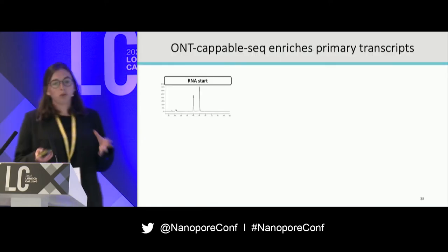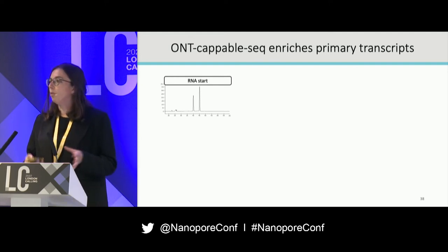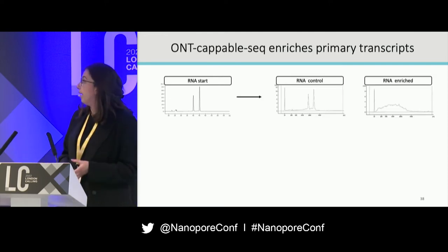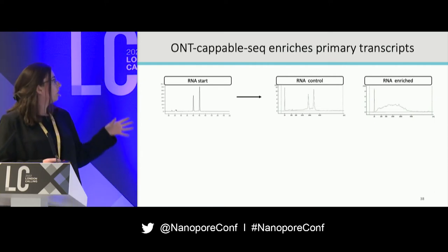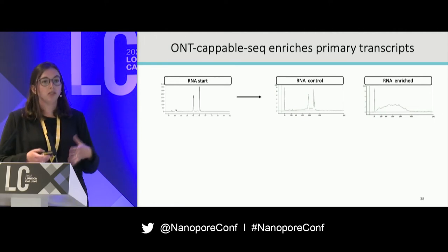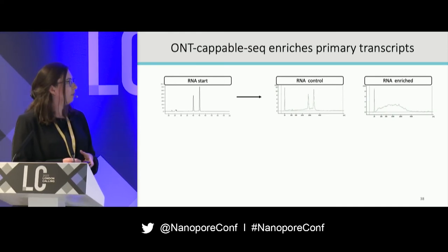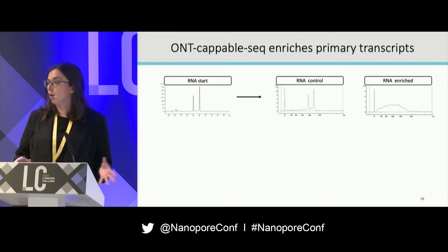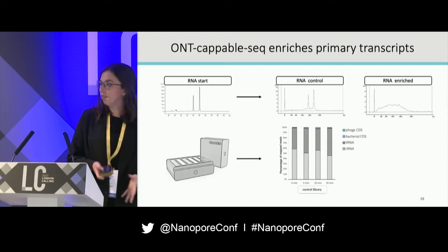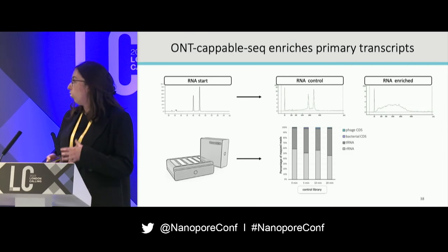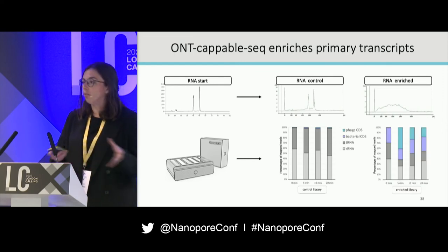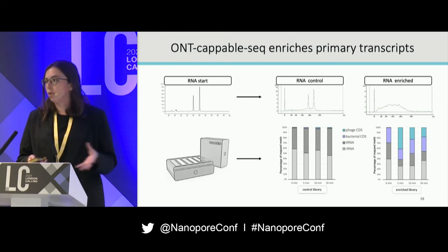During library preparation, we compared RNA profiles from the Bioanalyzer before and after. In our original and control RNA samples, you can see very high peaks representing the high amount of processed RNA, like ribosomal RNA species. However, after enrichment, those peaks are no longer visible, indicating our enrichment is working. This is also reflected in the sequencing results: in the control sample almost all reads map to ribosomal RNA, whereas after enrichment, far more reads are attributed to relevant coding sequences.